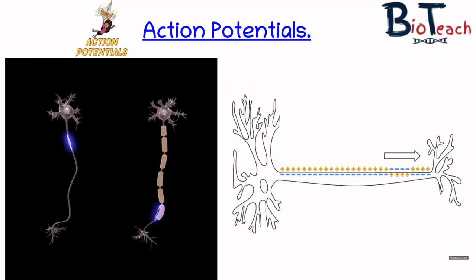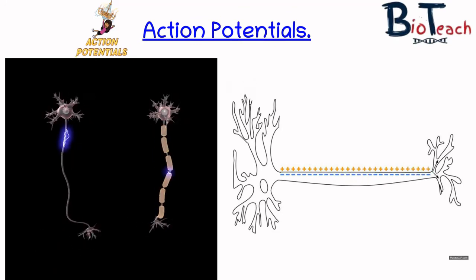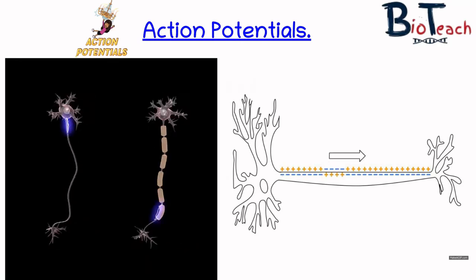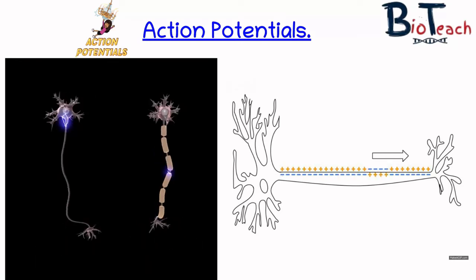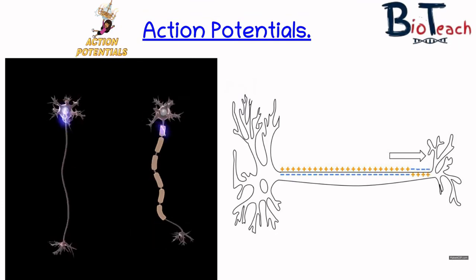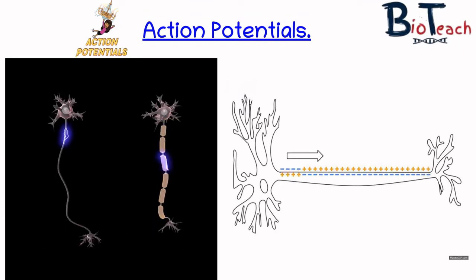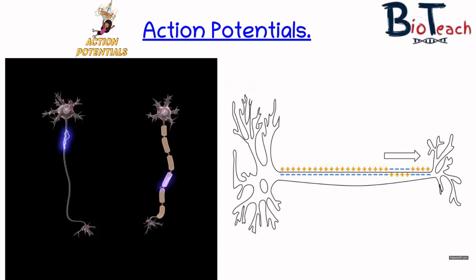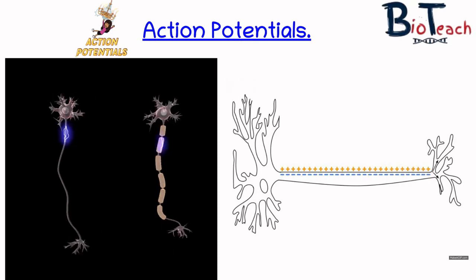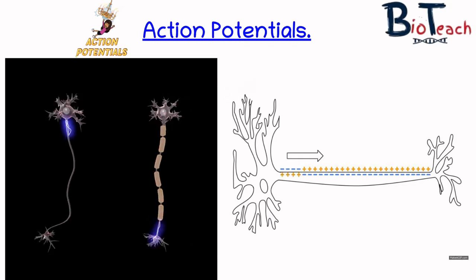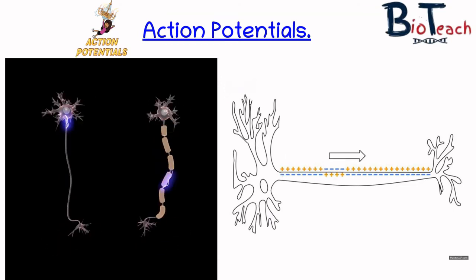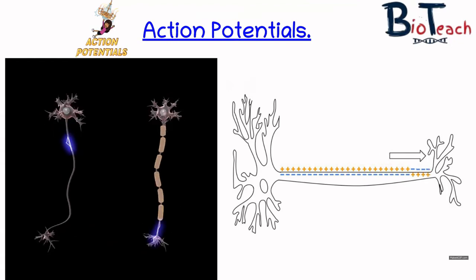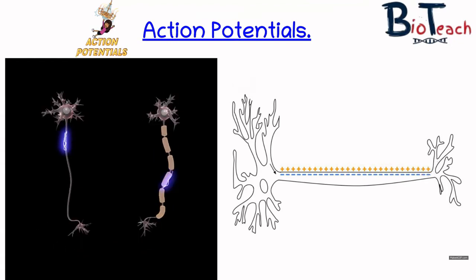Axon myelination is a feature of vertebrate nervous systems as it enables them to achieve a very rapid speed of nerve conduction. The myelinated neurons will conduct impulses only at the nodes of Ranvier because this is where the potentials are generated and where the channel proteins are. The axon is insulated by the sheath, so the action potential at one node is sufficient to trigger an action potential at the next node, and the impulse essentially jumps along the fibre.